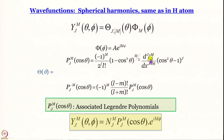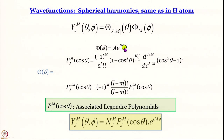Capital M arises out of the solution of the phi-dependent part of the equation. Capital Φ turned out to be A multiplied by e to the power iMφ. M stands for the Z-component of angular momentum. The allowed values are 0, ±1, ±2, and so on.